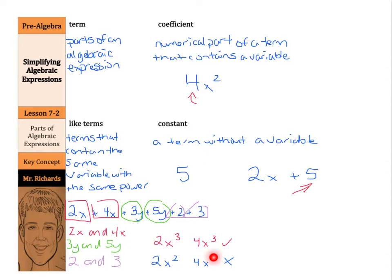Now, I said I get back to terms, parts of an algebraic expression. Basically, this 2x, this 4x, this 3y, the 5y, 2, and 3, those are all terms, all parts of the algebraic expression. And now that we have a basic understanding of the parts, let's see if we can identify these in our first example.